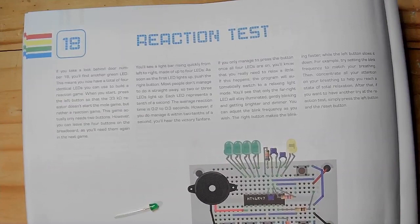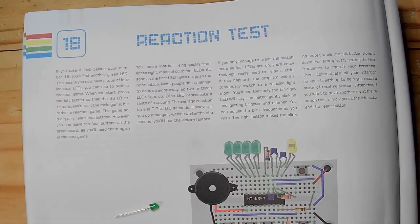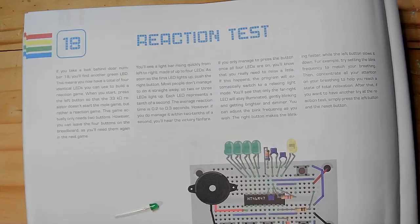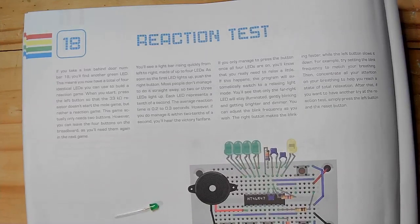You'll see a bright bar rising quickly from left to right made up of four LEDs. As soon as the first LED lights up, push the right button. Most people don't manage to do it straight away, so two or three LEDs light up. Each LED represents a tenth of a second. The average reaction time is 0.2 to 0.3 seconds. However, if you do manage it within two tenths of a second, you'll hear a victory fanfare.